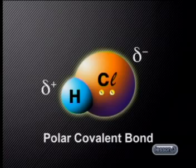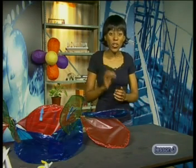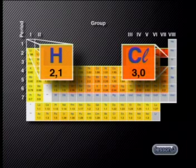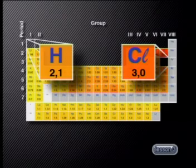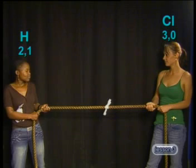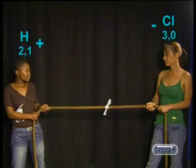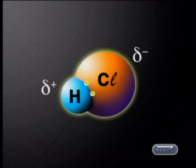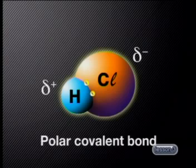This means that the chlorine end of the molecule becomes slightly negatively charged and the hydrogen end slightly positively charged — we described this bond as a polar covalent bond. Now let's use Pauling's electronegativity numbers to verify our original description. From the periodic table, hydrogen has an electronegativity number of 2.1 and chlorine an electronegativity number of 3.0. The chlorine has the larger number and so must pull the bonding pair of electrons closer to itself, making the chlorine end more negatively charged and the hydrogen end slightly positively charged. This confirms that the bond in hydrogen chloride is a polar covalent bond.